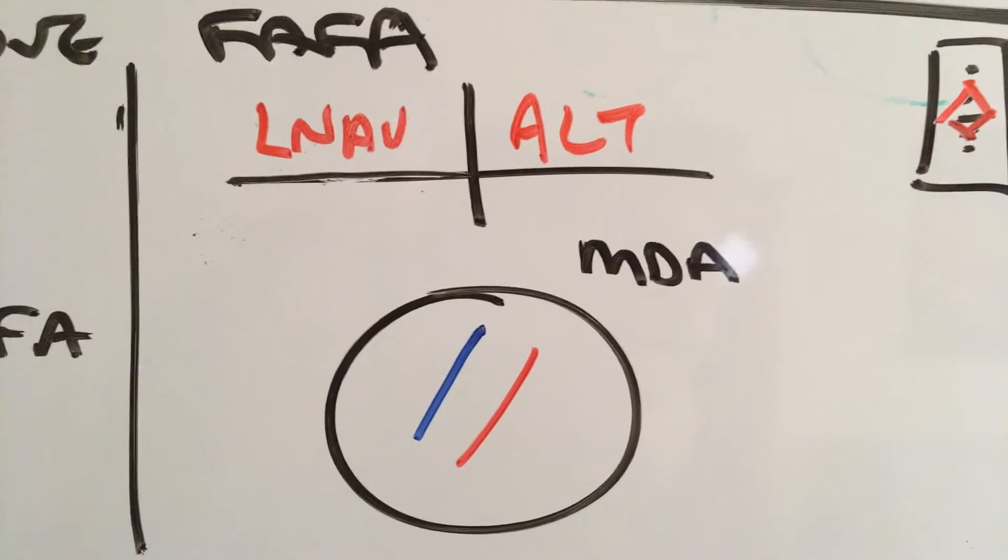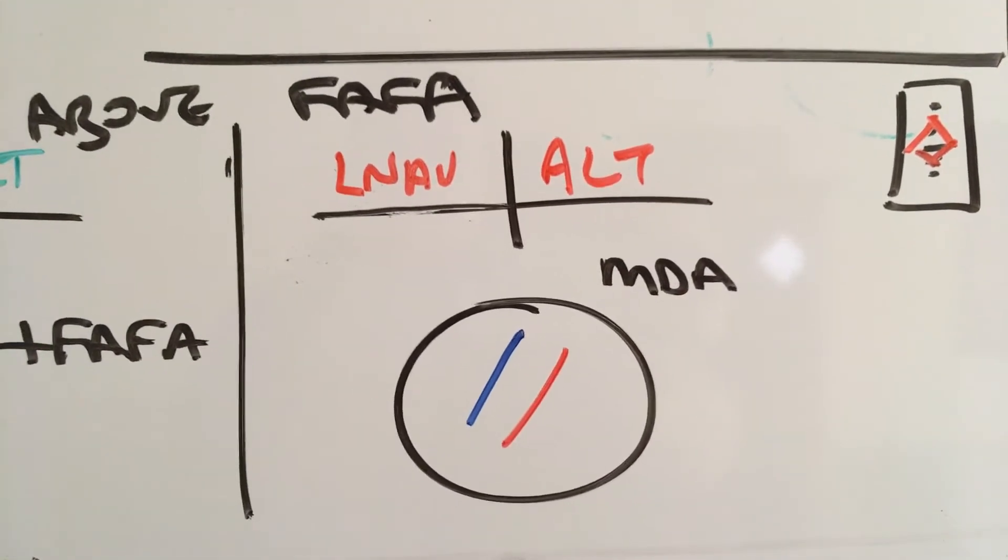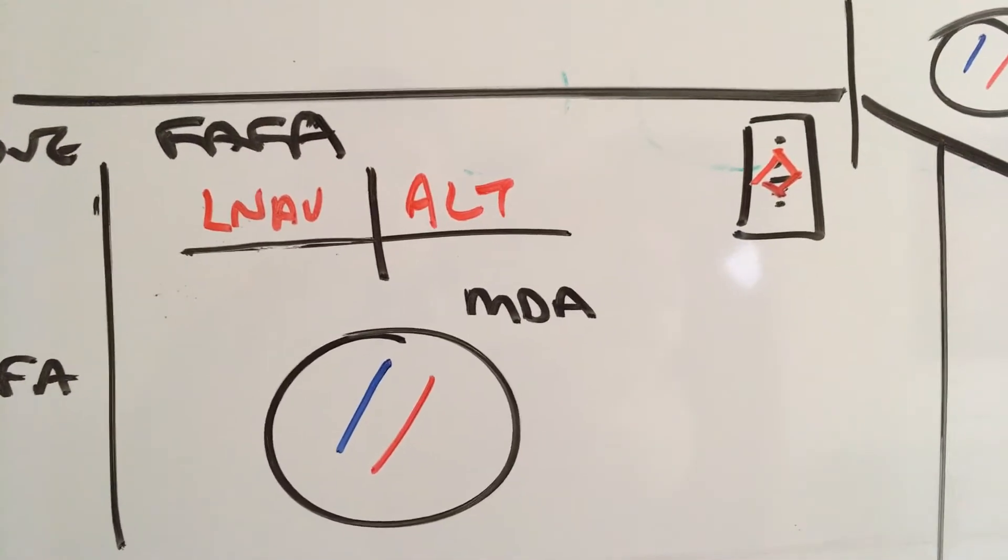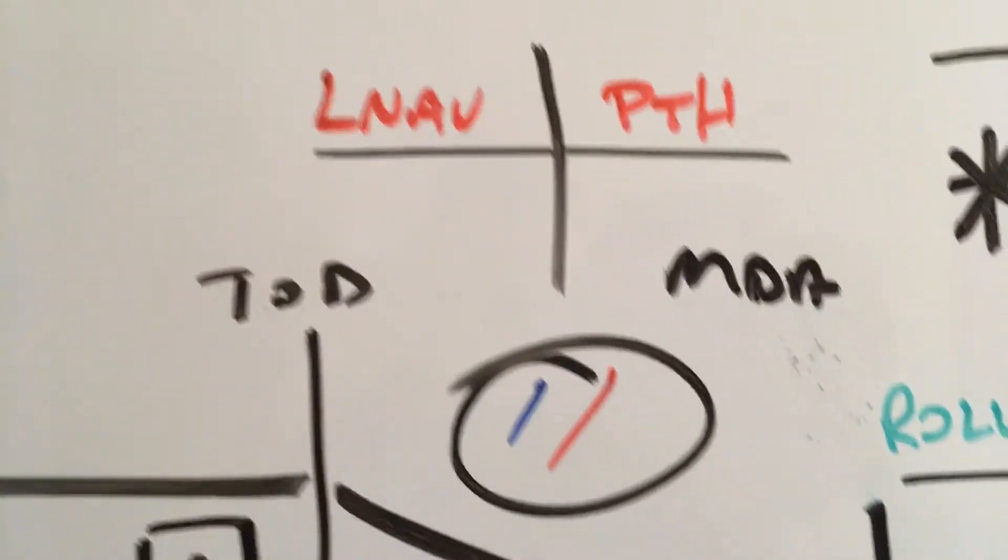We intercept the course inbound, LNAV, altitude, MDA, and coming up on top of descent. We'll hear ball. There we got the VTA. Transitions to LNAV and path, going down to your MDA.